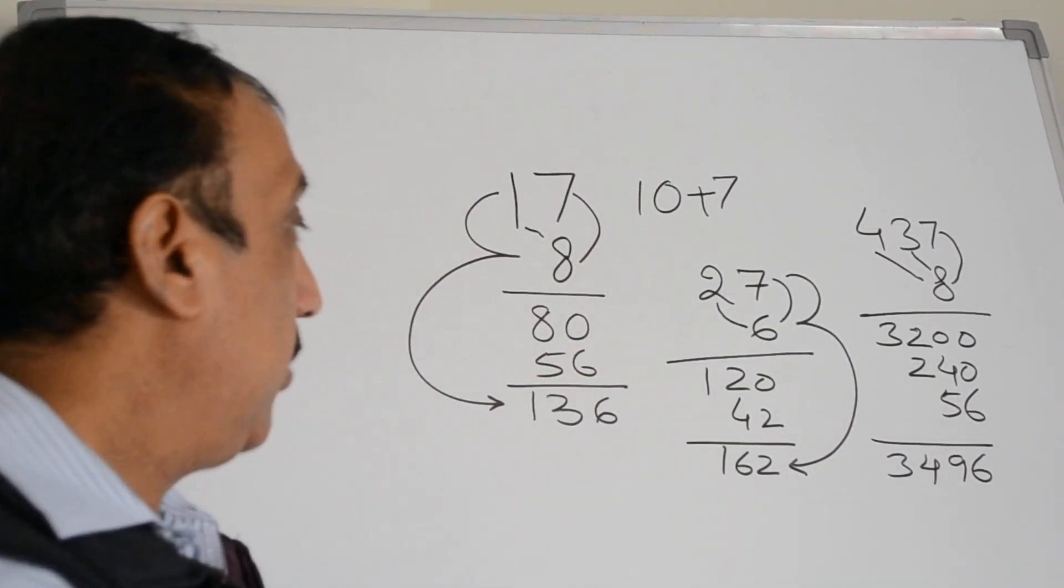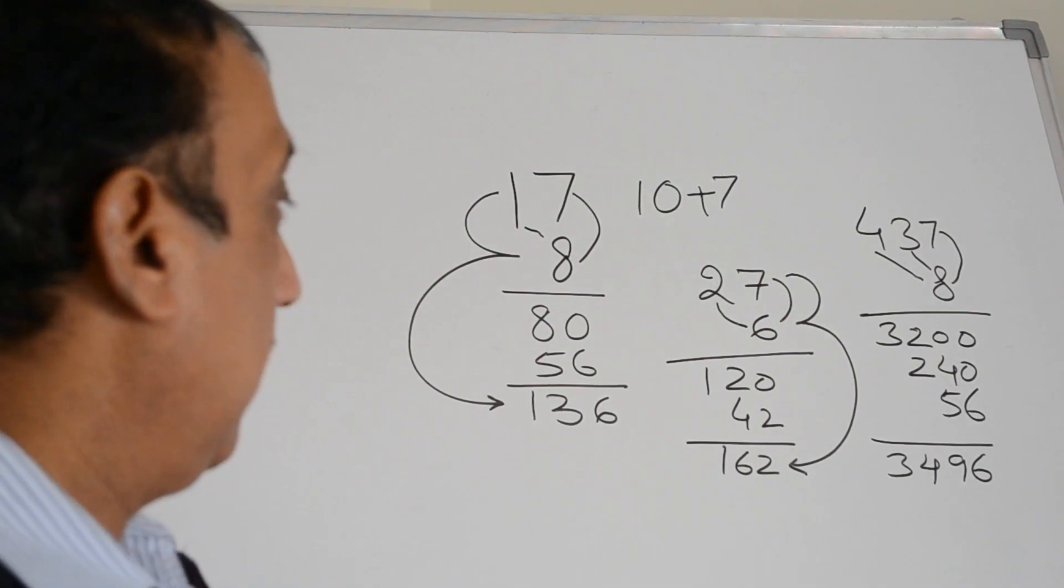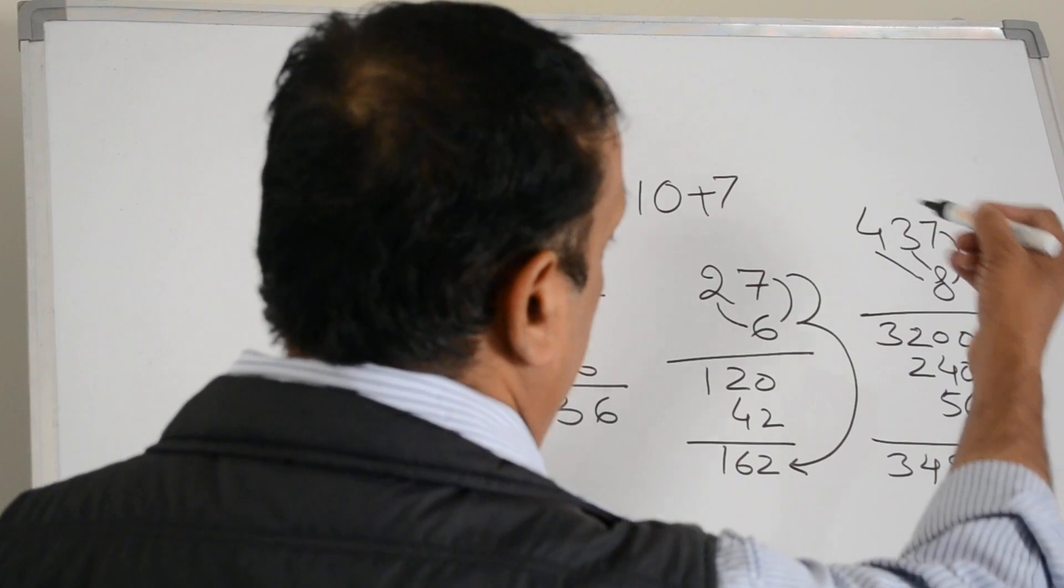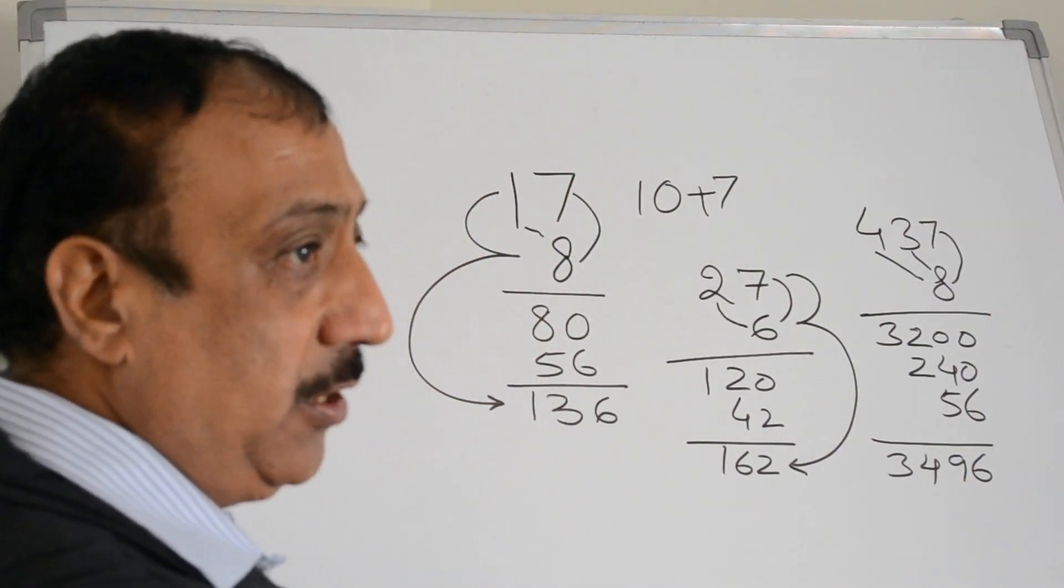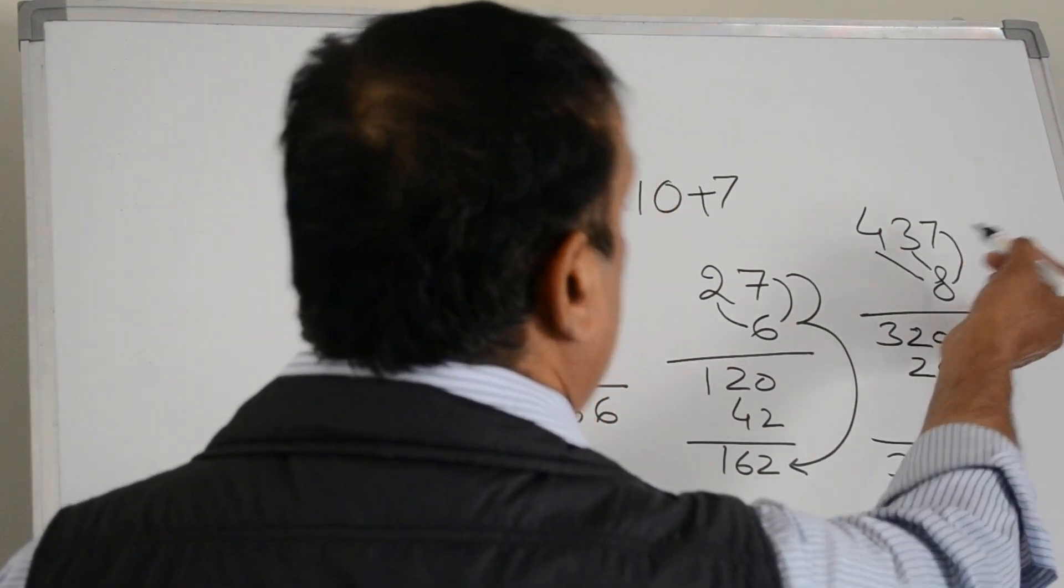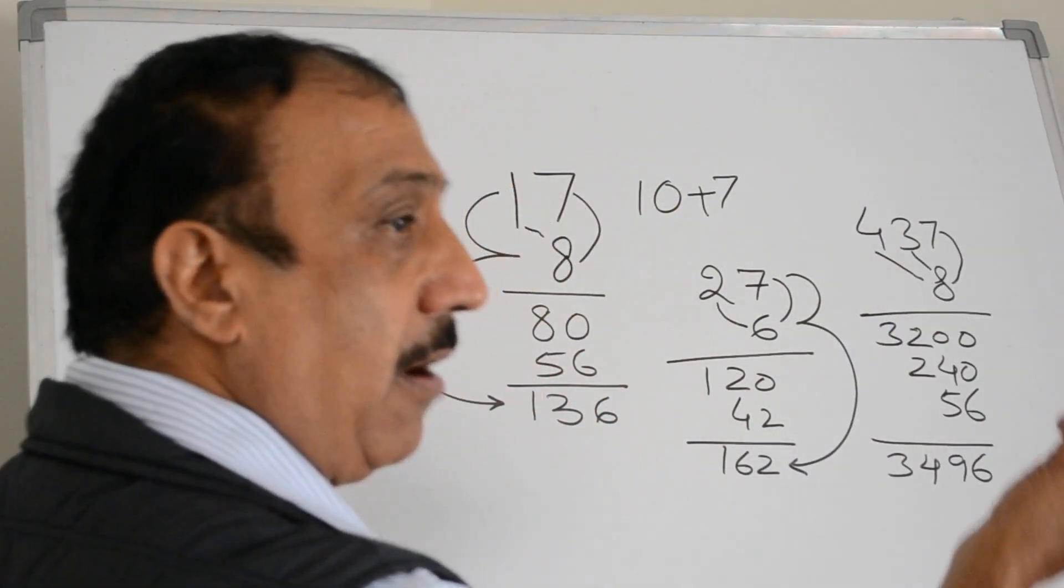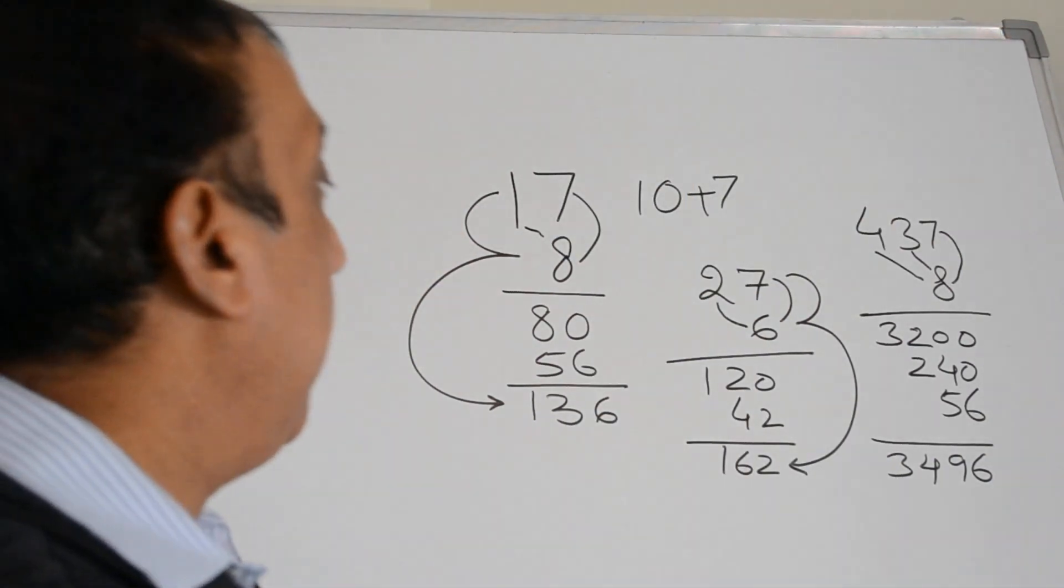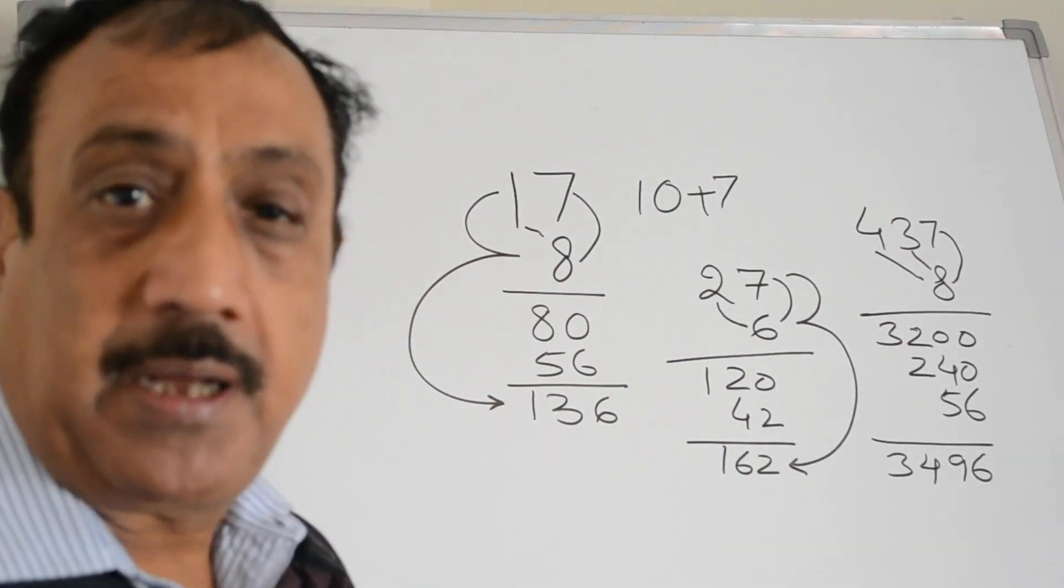So you have seen that we have eliminated the carrying on system which we were using in the traditional method, like 8 times 7 equals 56, carrying on 5 to the next number. That has been eliminated and things are much easier now.